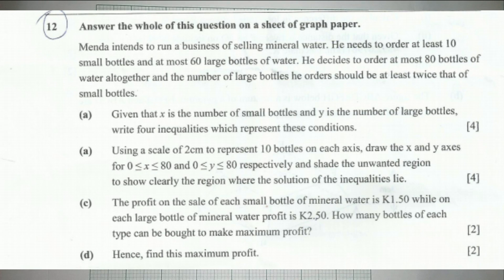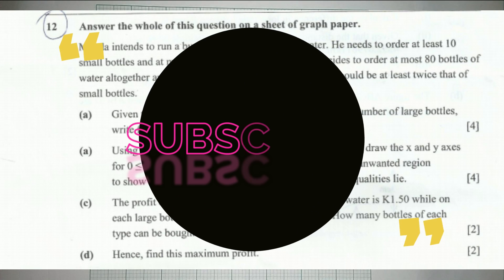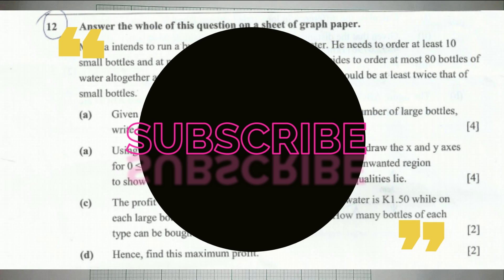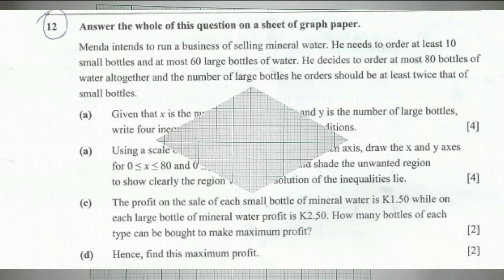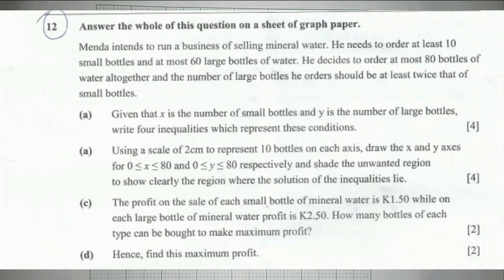Mender intends to run a business of selling mineral water. He needs to order at least 10 small bottles and at most 60 large bottles of water. He decides to order at most 80 bottles of water altogether, and the number of large bottles he orders should be at least twice that of small bottles.